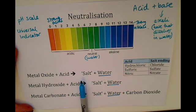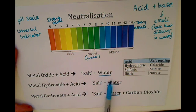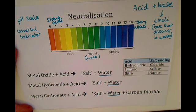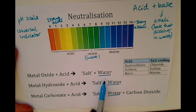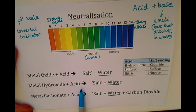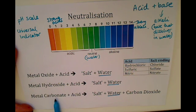When acids and bases react together, they form a salt and water. In some cases, other products too, such as carbon dioxide. If we had a metal oxide and reacted it with acid, we would make a salt and water. A metal hydroxide and acid would make a salt and water, and a metal carbonate and acid would make a salt plus water plus carbon dioxide.